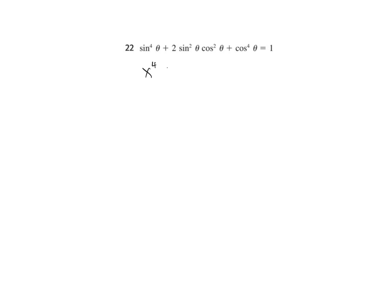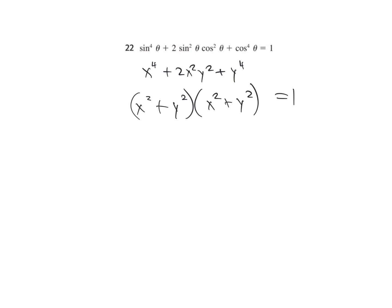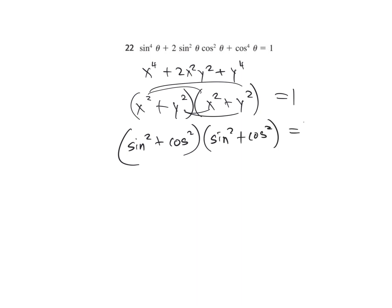Now I see a trinomial: x to the fourth plus 2x squared y squared plus y to the fourth. That factors as x squared plus y squared times x squared plus y squared. With sines and cosines, this is sine squared plus cosine squared times sine squared plus cosine squared. Both equal 1, so 1 times 1 is 1. Check.